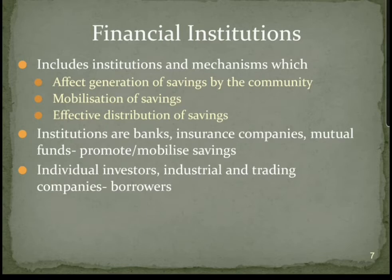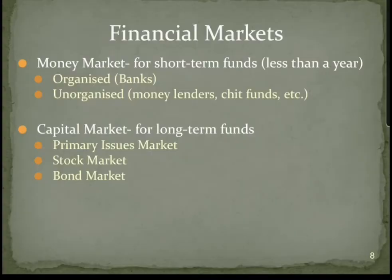Individual investors — people like you and me — as well as industries and trading companies are the borrowers. The money market consists of markets for short-term funds lasting less than a year. They are issued either by banks or the unorganized sector — that is money lenders or chit funds which are unorganized and unauthorized by the government.